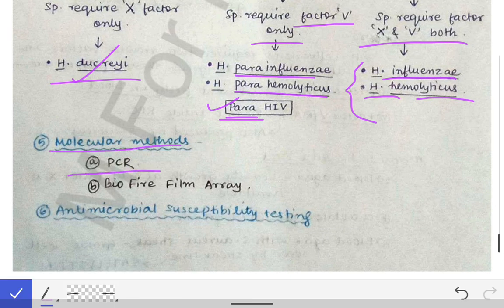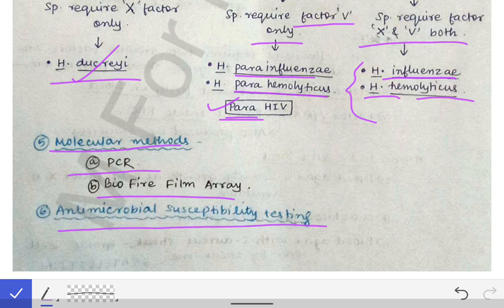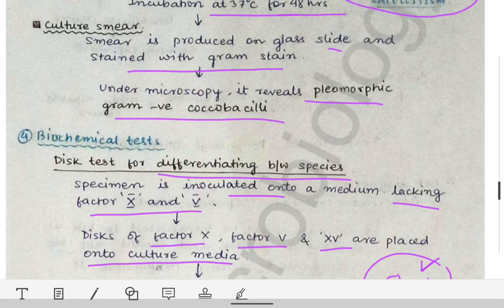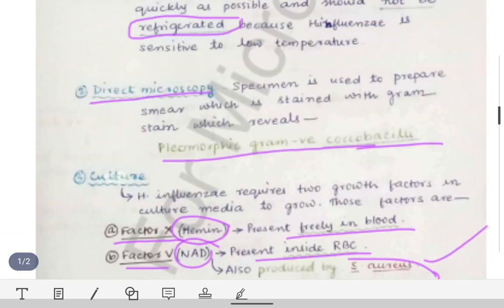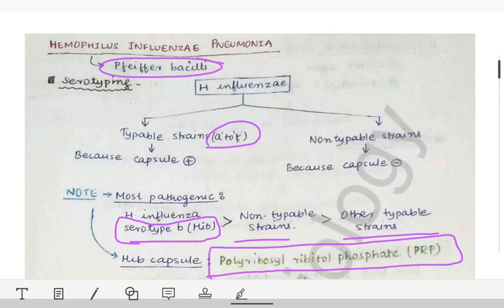We also have molecular methods such as PCR and the BioFire FilmArray, by which we can specifically and correctly identify the strain or species of the bacteria. Additionally, antimicrobial susceptibility testing tells us which effective antibiotics can be used to treat the patient. This is all about the lab diagnosis of Haemophilus influenzae bacteria causing pneumonia.